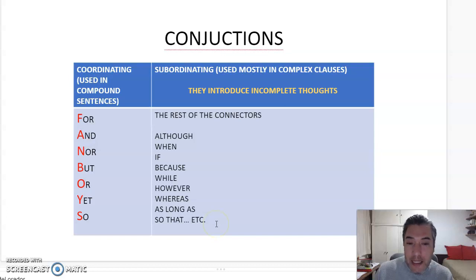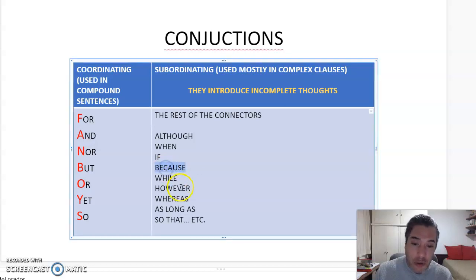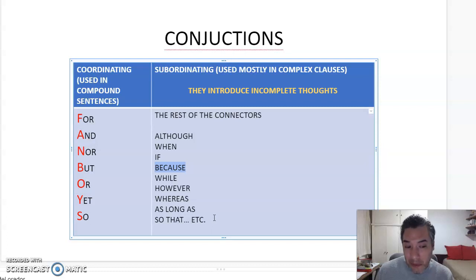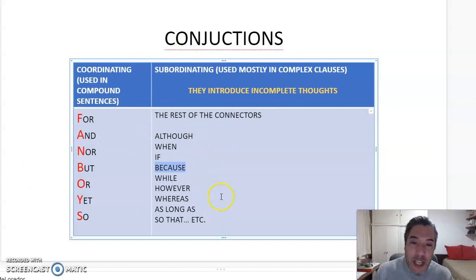It means that if you have a clause introduced by a subordinating conjunction, the idea is incomplete and you cannot understand what is said. For example, if you say 'because I like,' it doesn't make sense because you need more information — what do you like? So these are conjunctions, and you have to know about them and study them.